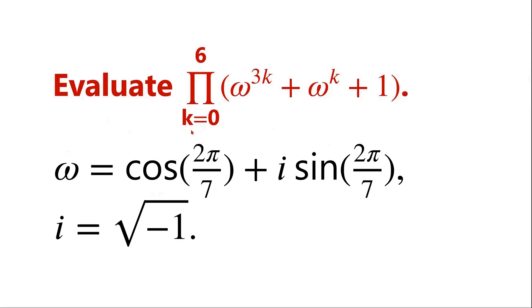Evaluate this algebraic expression: omega equals cosine 2π over 7 plus i sine 2π over 7, where i equals the square root of minus 1.